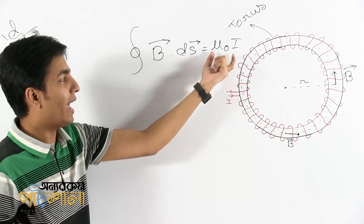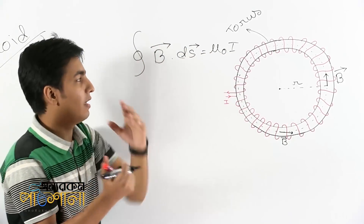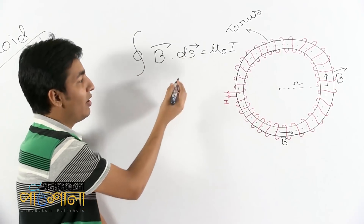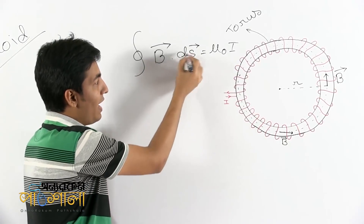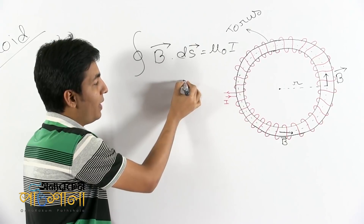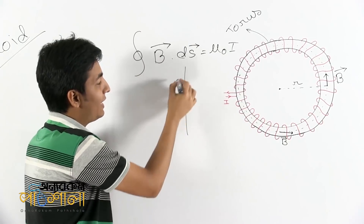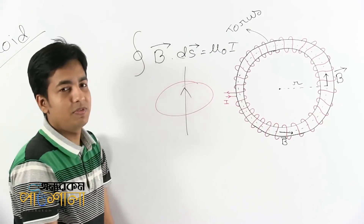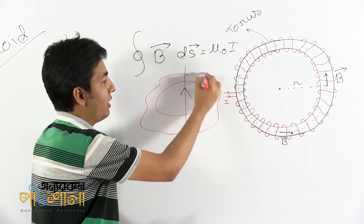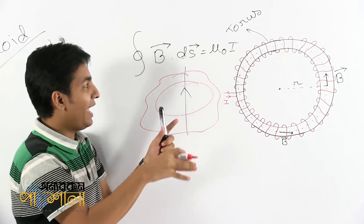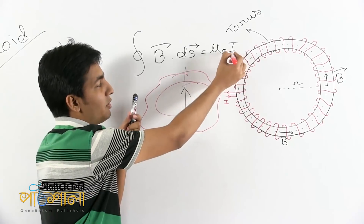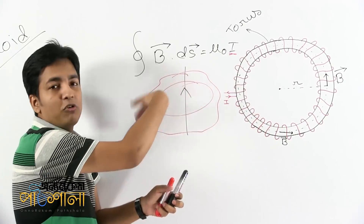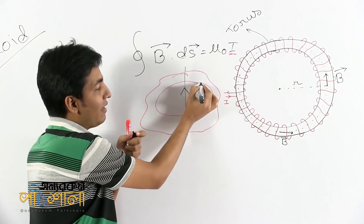Then we have mu naught i. So this is the closed path. When we are at this point, we are at the same time at the closed loop. We have to look at this model — the R is the target. This closed path is not the ds.